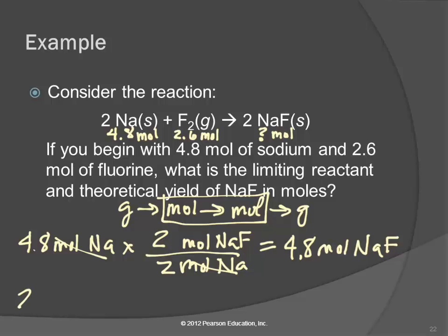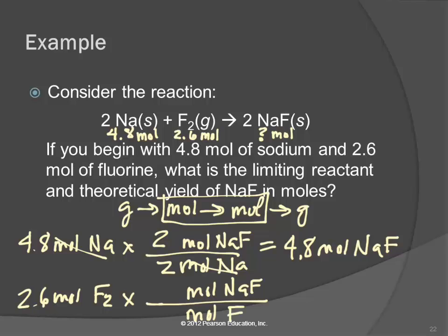Then take 2.6 moles of fluorine and find how many moles of sodium fluoride we can make. We multiply by moles of sodium fluoride and divide by moles of fluorine. There's a 2 in front of sodium fluoride and an implied 1 in front of fluorine. So 2.6 times 2 divided by 1 gives us 5.2 moles of sodium fluoride.